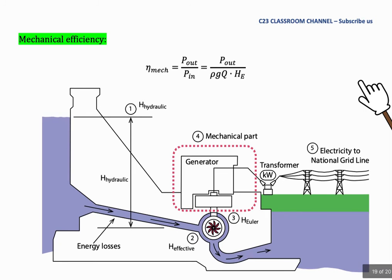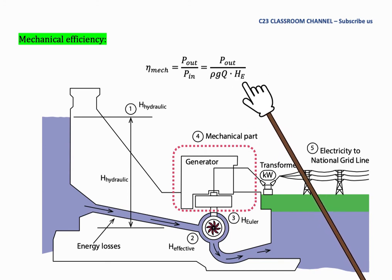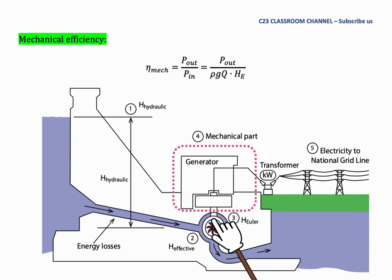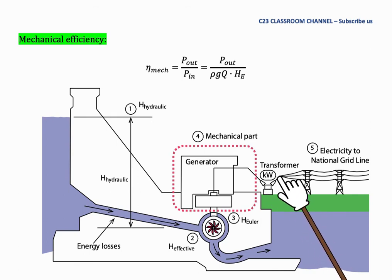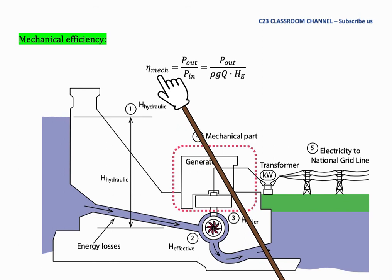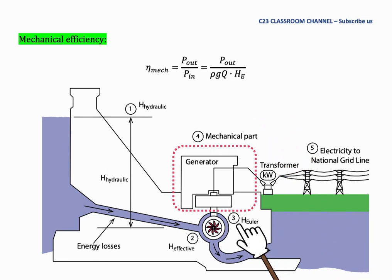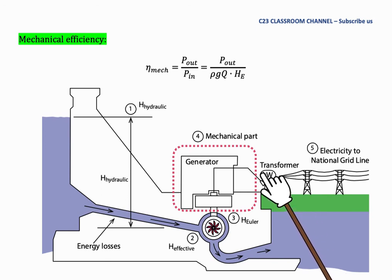Mechanical efficiency can be defined as power out divided by ρGQ·H_Euler. From this diagram, mechanical efficiency is the efficiency of power going from the Euler head — the output of the Francis turbine — to the transformer. The input power is the Euler head, and the output power is what reaches the transformer. So mechanical efficiency can be written as P_out over ρGQ·H_Euler.